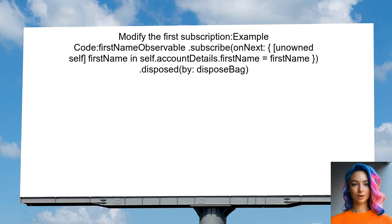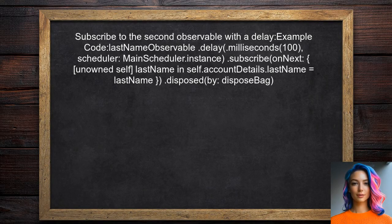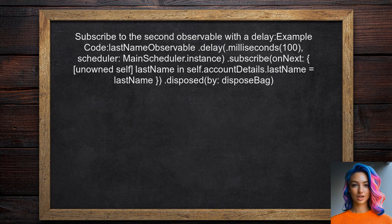The user should modify the subscription to the first observable. This will allow the user to set the account details before the second observable triggers. Then the user should subscribe to the second observable with a delay.